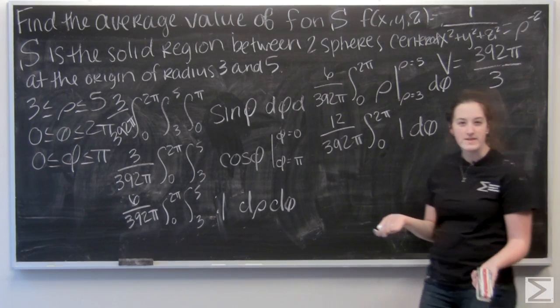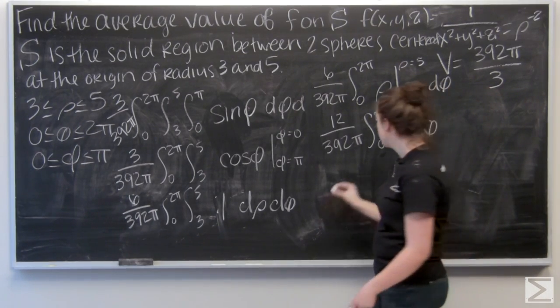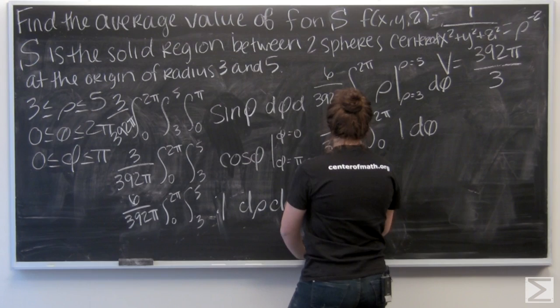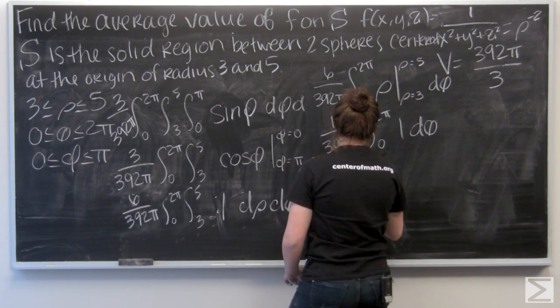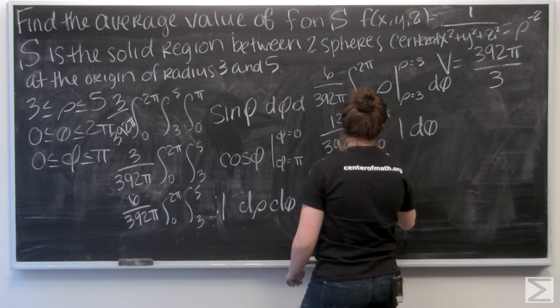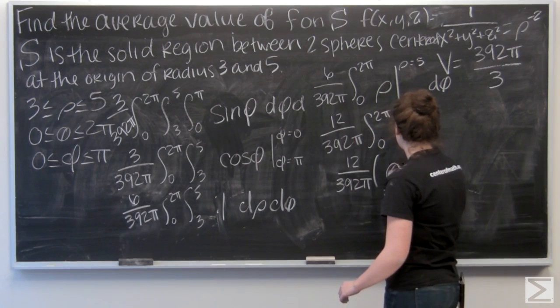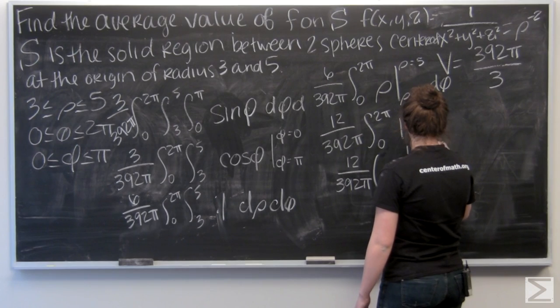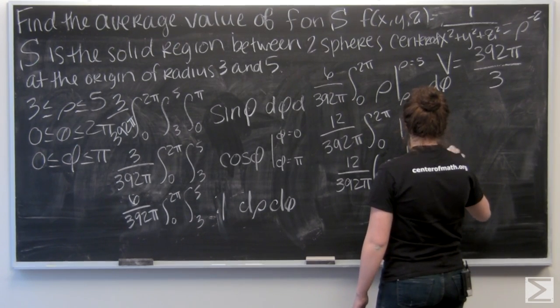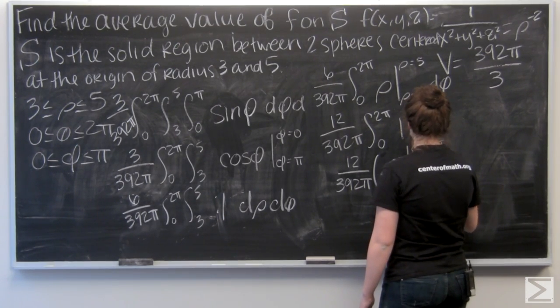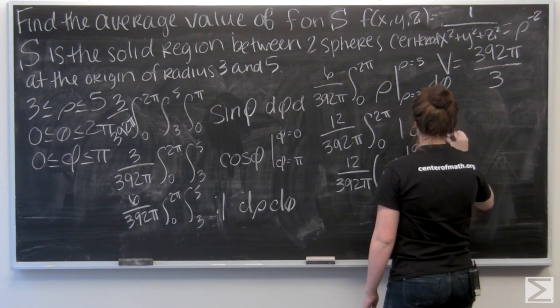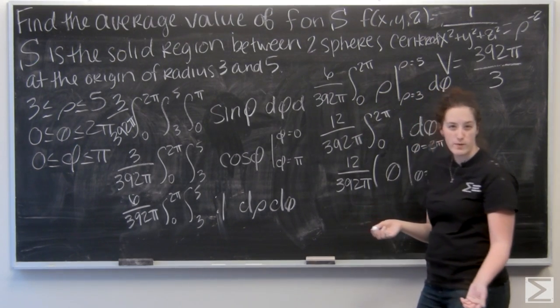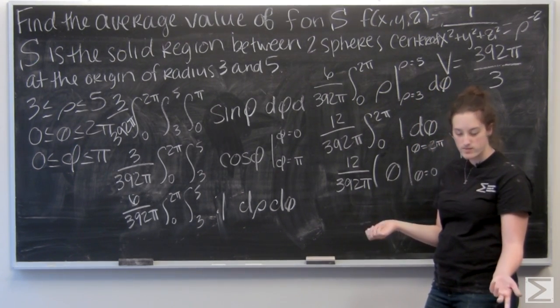So now I'm just integrating d theta, which is going to be theta. And I want to evaluate that from zero to two pi. Well, this is pretty straightforward. I'm going to get two pi minus zero, which is just two pi.